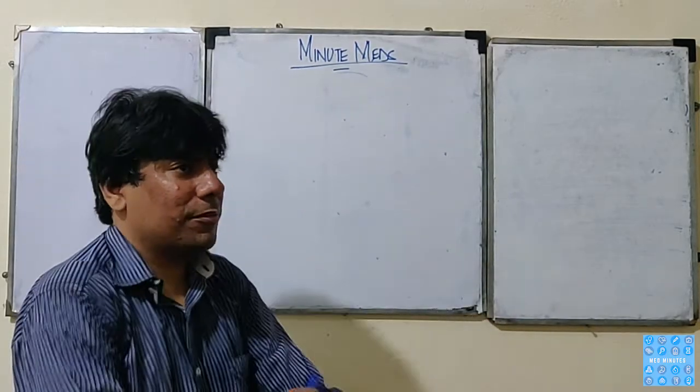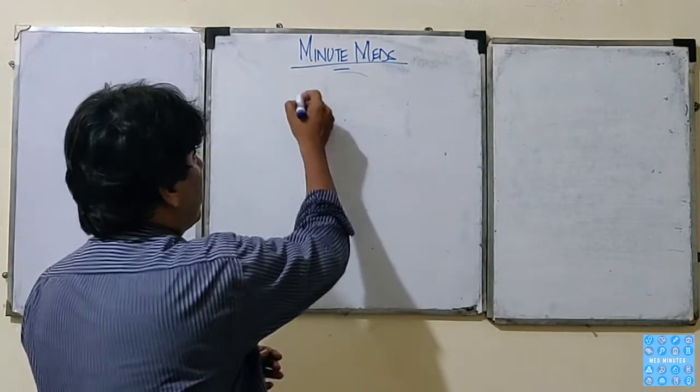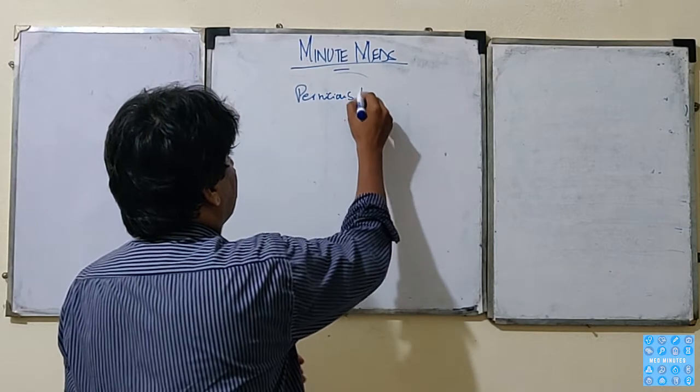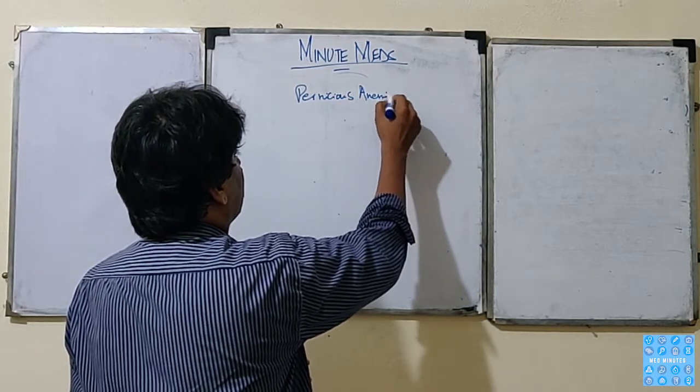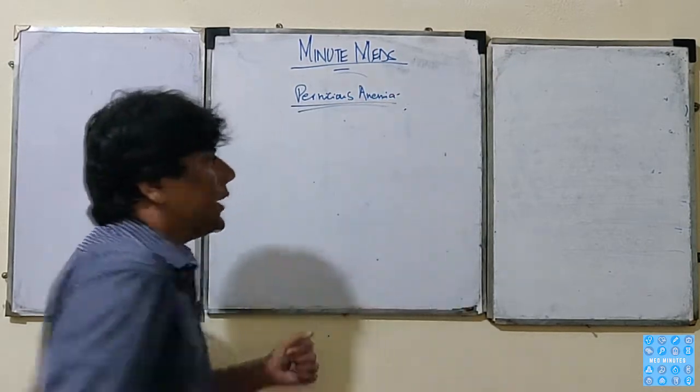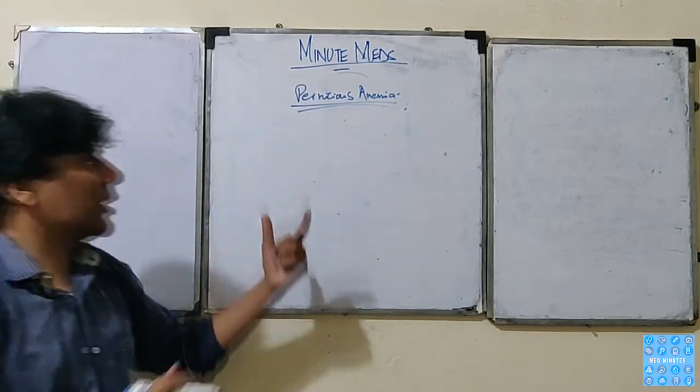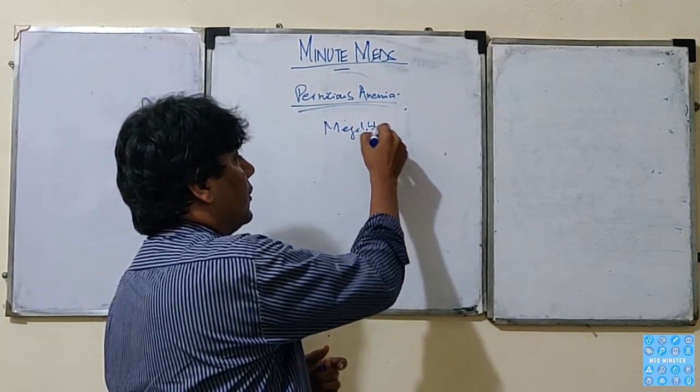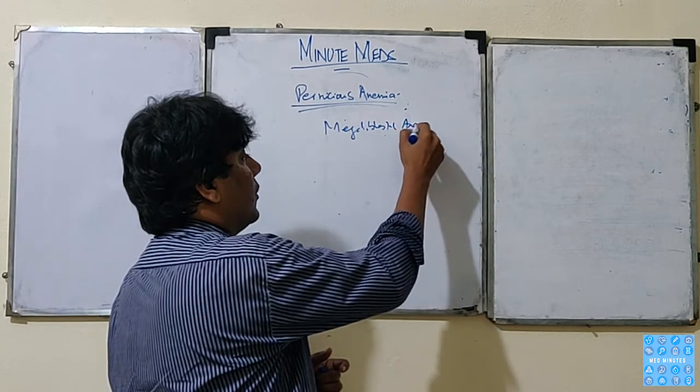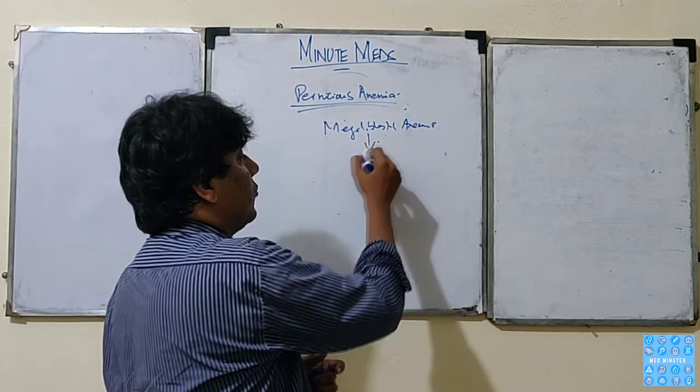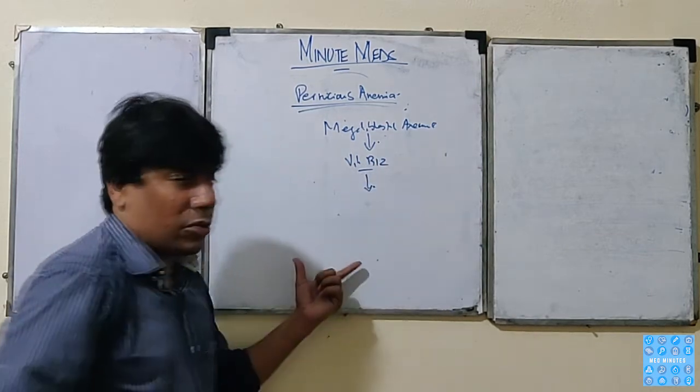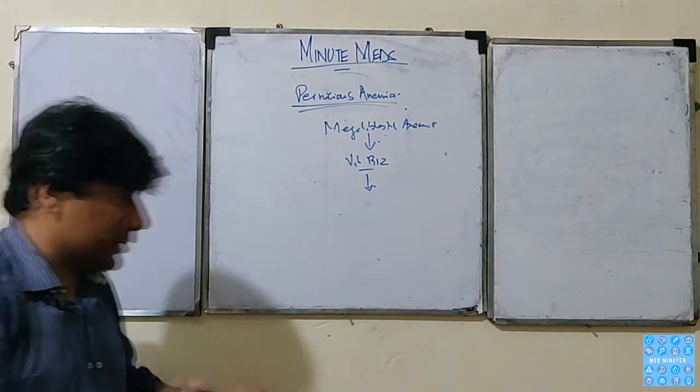The type of megaloblastic anemia is pernicious anemia. Actually, it is megaloblastic anemia. The type of megaloblastic anemia is pernicious anemia. The cause is autoimmune destruction of the parietal cells.